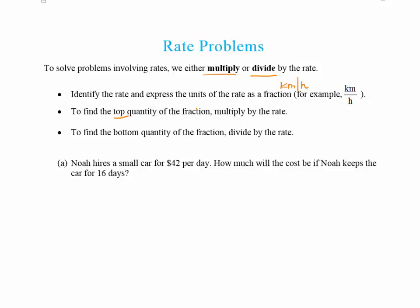So to find the top quantity of the fraction, we're going to be multiplying by the rate. And to find the bottom quantity of the fraction, we're going to be dividing by the rate. And this is a method that always works.